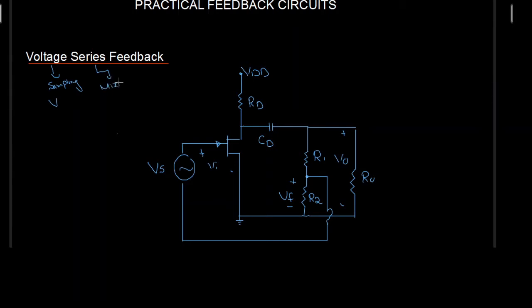Mixing always takes place at the input side. Because we have series mixing here, series mixing is also called voltage mixing, which means at the input side we are also going to have the voltage. Because we have series here, the feedback and input signal are going to be in series.